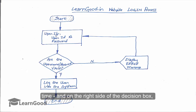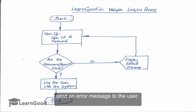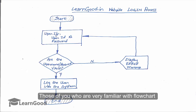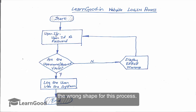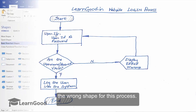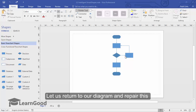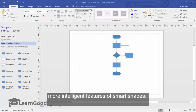On the right side of the decision box, there is a process that requires the system to send an error message to the user. Those of you who are very familiar with flowchart diagrams and its conventions might have noticed that in my flowchart diagram, I have used the wrong shape for this process. Let us return to our diagram and repair this mistake.